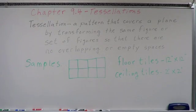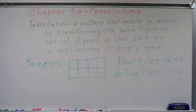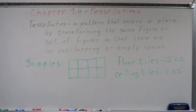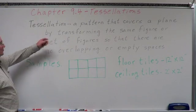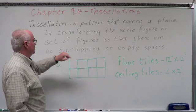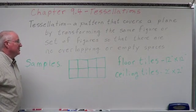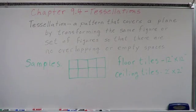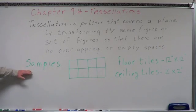The next transformation we want to talk about is a tessellation — Chapter 9.4. Tessellation is a pattern that covers a plane or a flat surface by transforming the same figure or set of figures so that there are no overlapping or empty spaces.